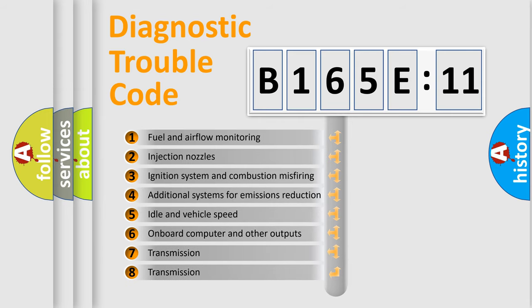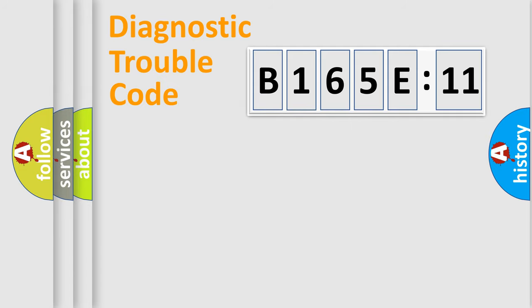The third character specifies a subset of errors. The distribution shown is valid only for the standardized DTC code. Only the last two characters define the specific fault of the group.